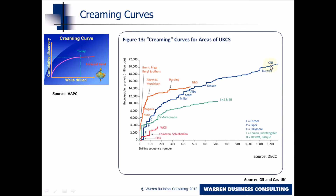Looking at the Central North Sea, in many ways it's like the classic creaming curve. Early on, big discoveries were made with a very rapid rise including some named fields. After 500 wells, things began to level off — but after 1000 wells, another step up. This was a new play concept: the Buzzard field — new oil found in a relatively mature exploration area — which stimulated the North Sea into a further period of exploration.